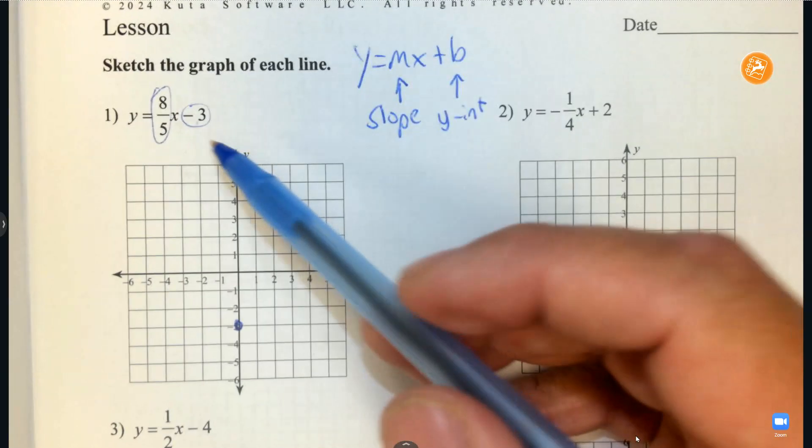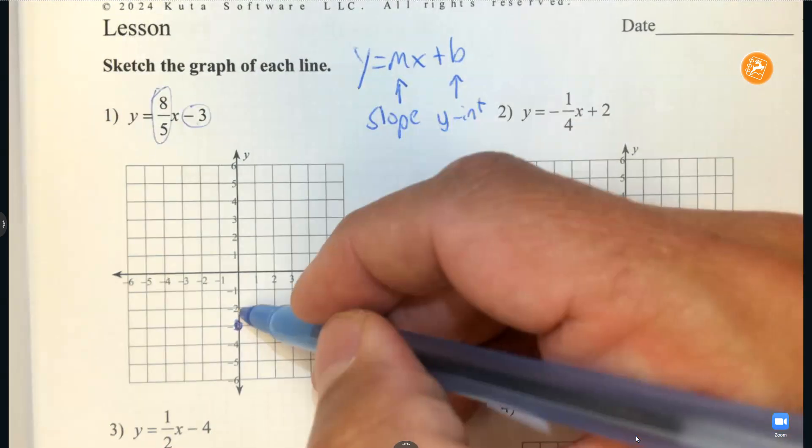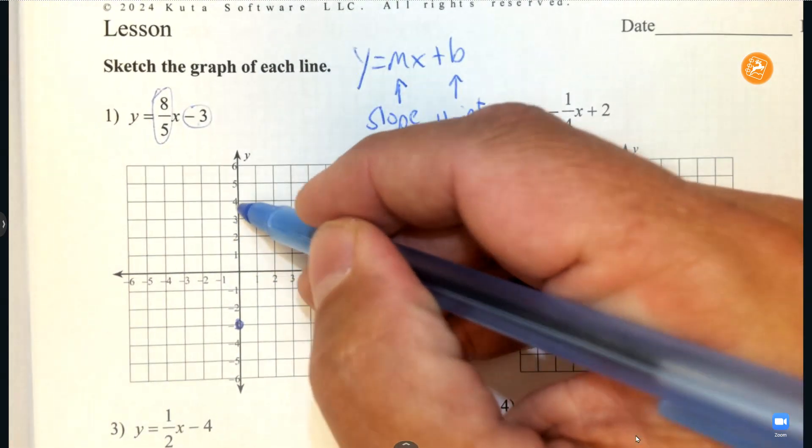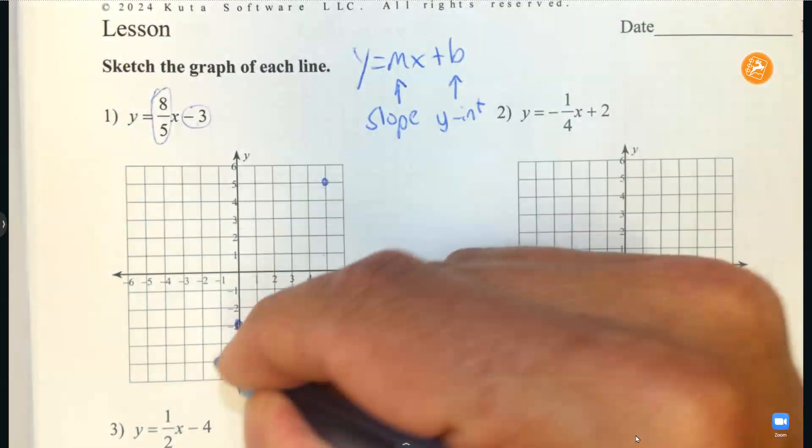And then from that point, slope is rise over run. So I'm going to go up 8, 1, 2, 3, 4, 5, 6, 7, 8, and over 5. Put a second point down, and then you draw your line.